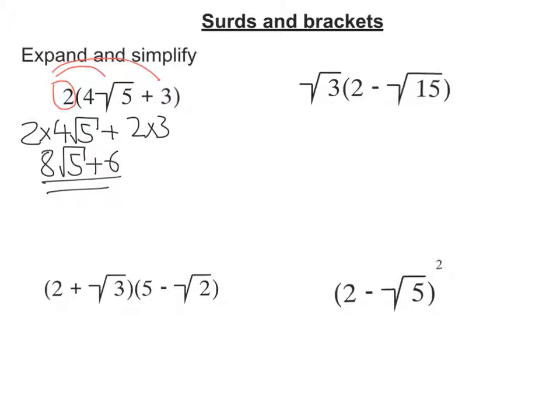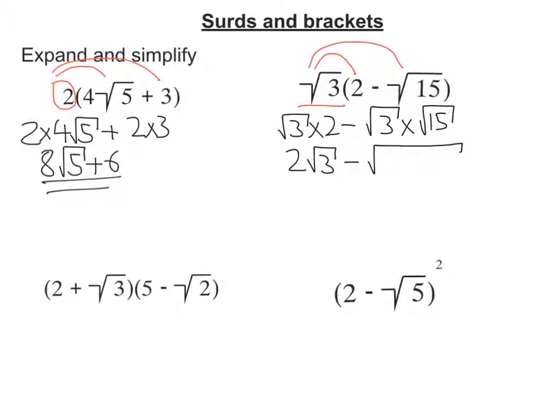Let's move on to our second example. We've got root 3 that's going to multiply the 2 and the negative root 15. So I'm going to get root 3 times 2 minus root 3 times root 15. Root 3 times 2 is just the same as 2 times root 3, so 2 root 3. And we can write this as under one big square root sign, and that would be 3 times 15. So we're going to get 2 root 3 minus root 45.